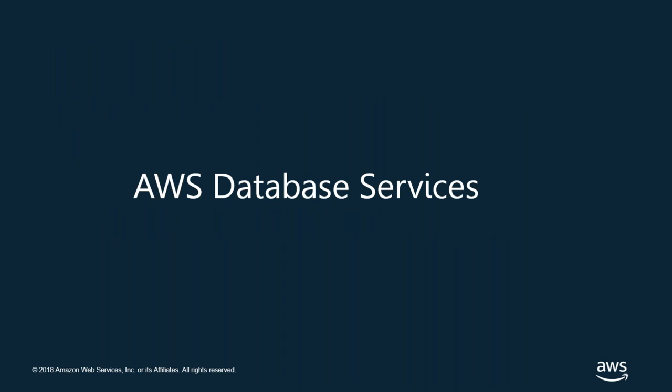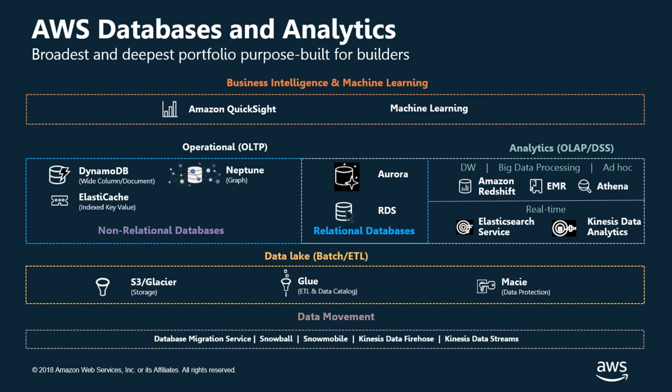So the database market is changing and application architecture is changing. What does AWS have to offer given all these different data platforms? I'm going to give you a quick overview of the database services available on our platform. This diagram represents the overall view of core services — there are actually more services, especially on the AI and ML side. Starting from the bottom: data movement includes the Database Migration Service, Snowball and Snowmobile physical devices for moving large amounts of data, and Kinesis Data Firehose and Kinesis Data Streams for getting data into AWS.